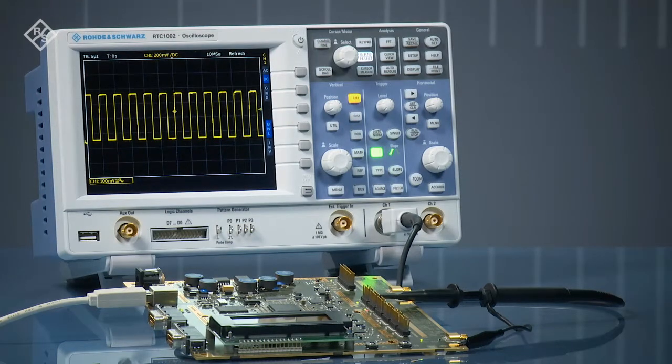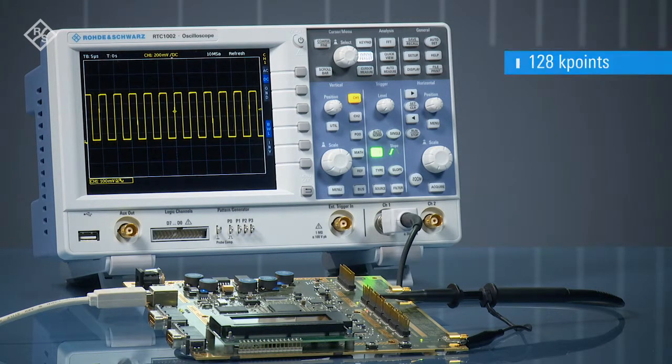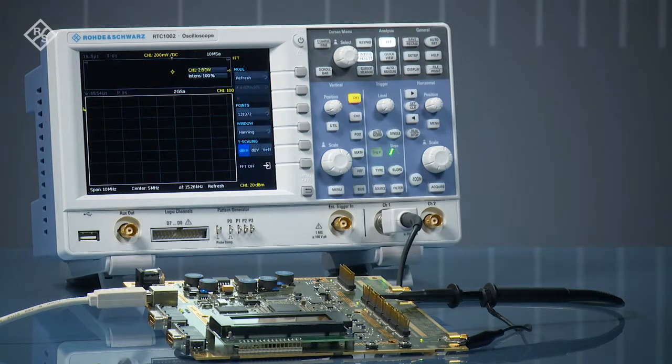RTC 1000 series oscilloscopes include frequency analysis as a standard feature. Do you want to ensure that unwanted frequencies aren't coupled into your system? Or do you want to look at frequency components of your signal? Just press the dedicated FFT button to see the fundamental frequency in multiple harmonics.